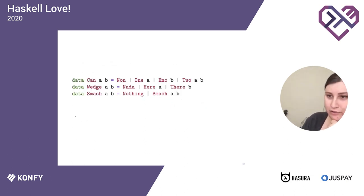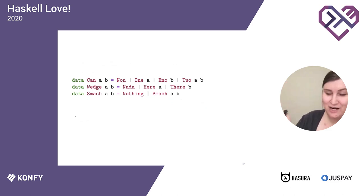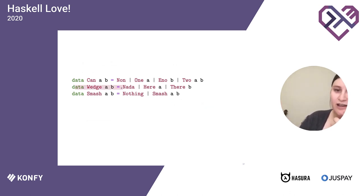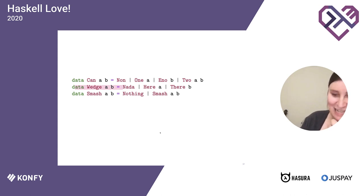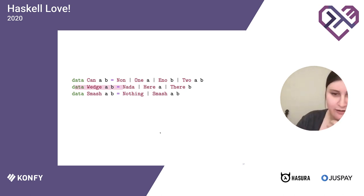In the end we have three data types for the geometric constructions we just did, translated to Haskell. I call them Can — which is unit plus A plus B plus A×B — the Wedge, which is Nada, Here A, or There B, and the Smash, which is the unit case or the pair. There's a little bit of skimping and massaging that needs to happen to fully formalize this theory — we need to track what we mean by base points, justify things in terms of what adjunction we're using, and so on.